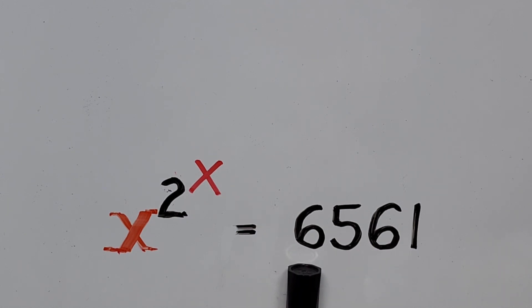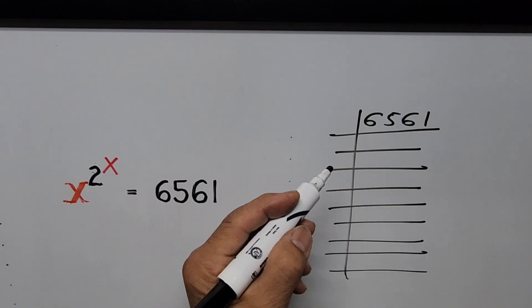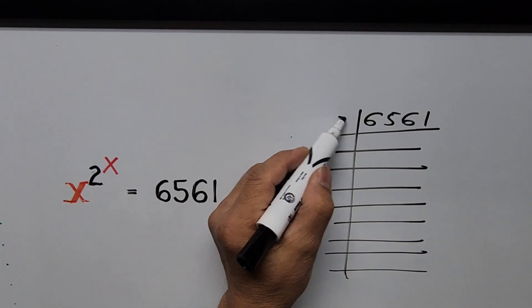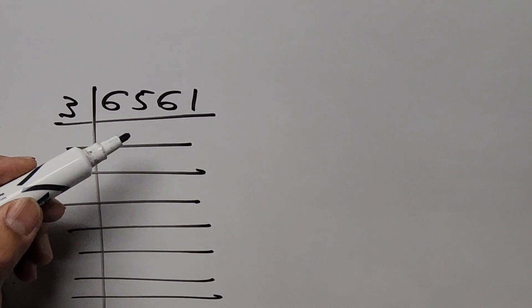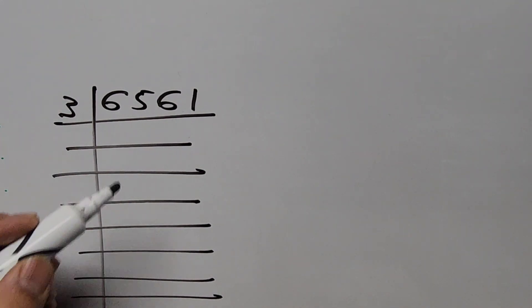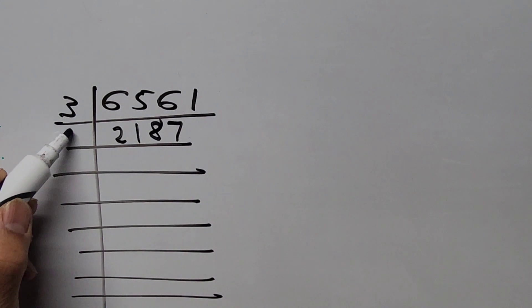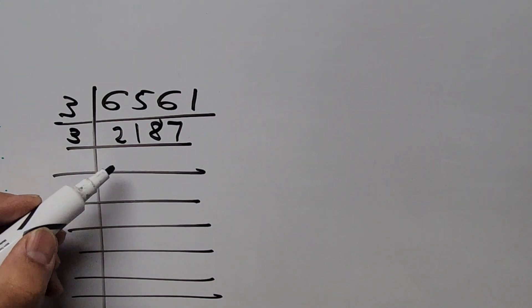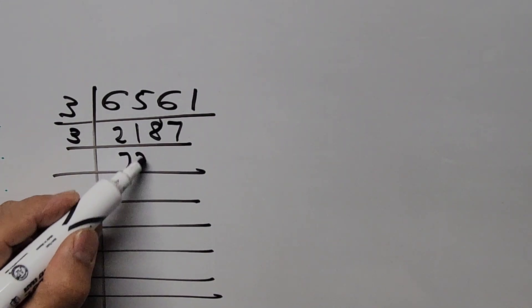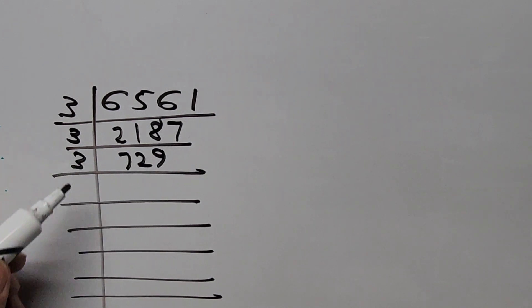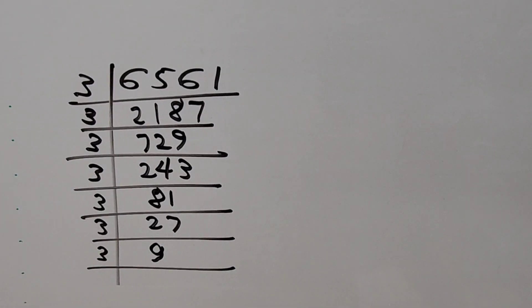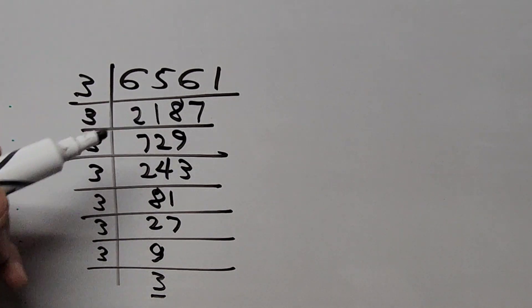So 6561 divided by 3, that is 2187. And divide by 3 again, that will be 729. Keep dividing by 3, then 9 divided by 3 is 3. So that's the last factor of that 6561.